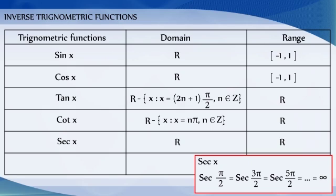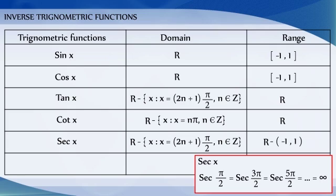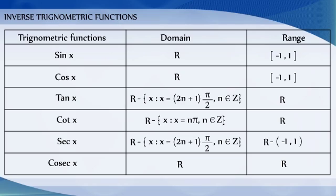The value of the secant function becomes infinity for all odd multiples of pi by 2. Therefore, its domain is the set of all real numbers except the set of all x such that x is equal to (2n+1) times pi by 2, where n belongs to integers, and its range is R minus the open interval (minus 1, 1). The secant function will never take values in between minus 1 to 1. Similarly, the domain of the cosecant function is all R minus the set of all x such that x is equal to n pi, where n belongs to integers, and its range is R minus the open interval (minus 1, 1).